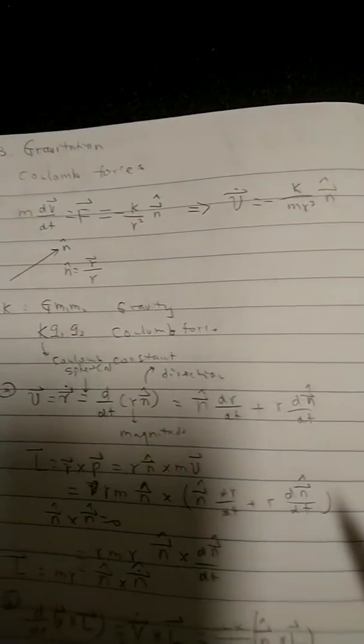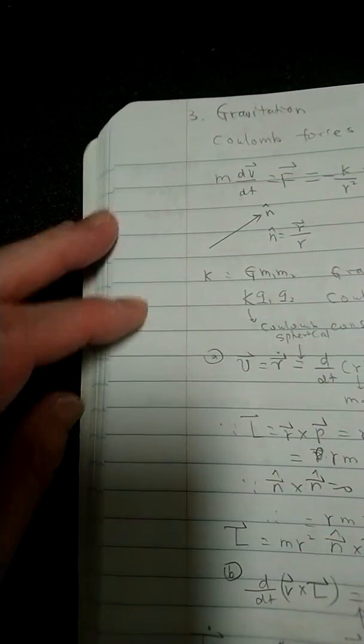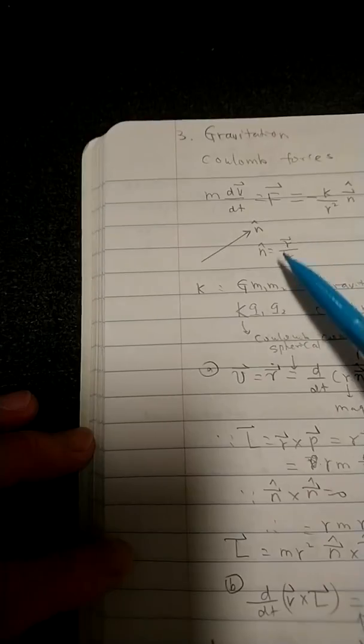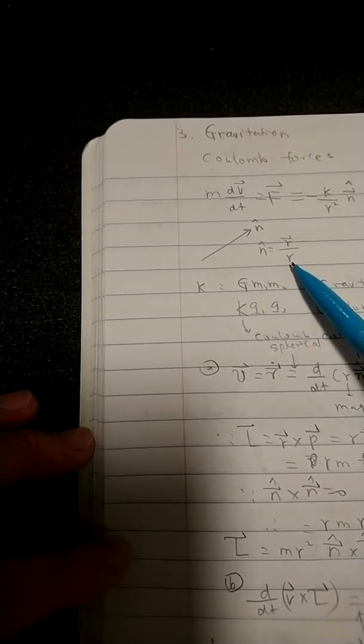So there's no surprises here. So what that means, this n is defined as the r, the vector divided by the length of this vector, which is the magnitude of that.